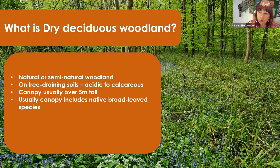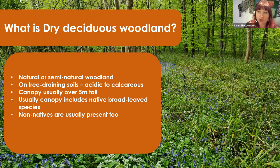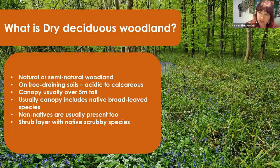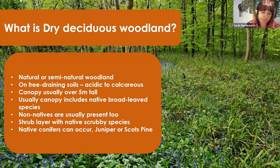There are usually some non-natives present as well — sycamore, beech, horse chestnut, sweet chestnut — things that have been planted at some point or self-regenerated. The shrub layer or understory is normally made up of native scrubby or shrub species: hawthorn, blackthorn, elder, and hazel is a very common one.